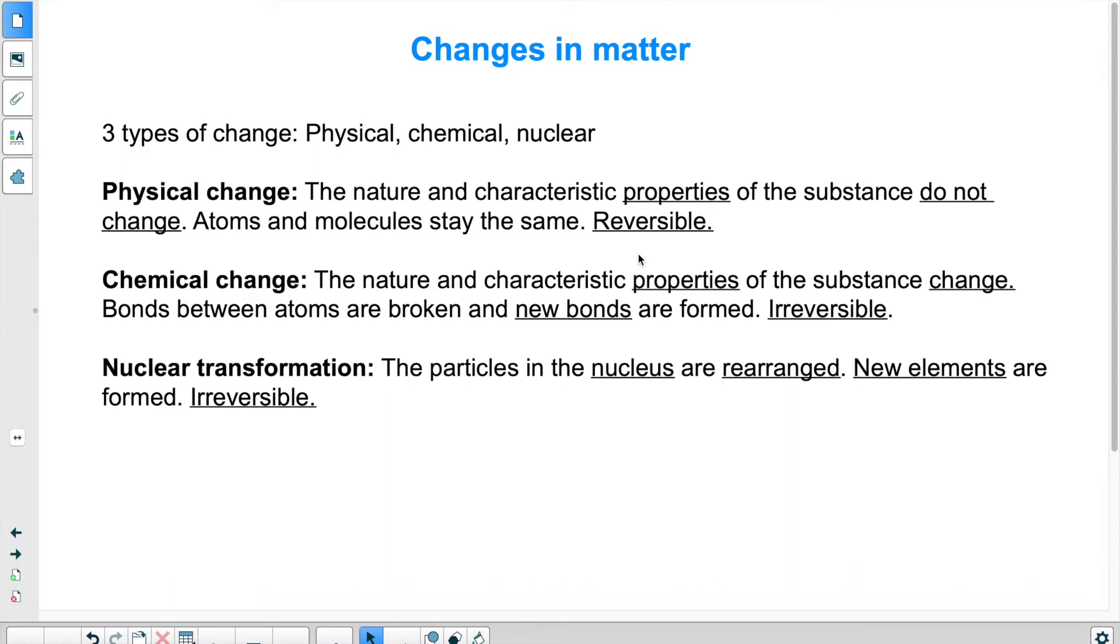In a chemical change, we are breaking bonds between the different substances and we are forming new substances. So because of this, the properties of those various substances will have to change. They're no longer the same as they were at the beginning because new bonds and new substances are formed. In this case, it is irreversible.